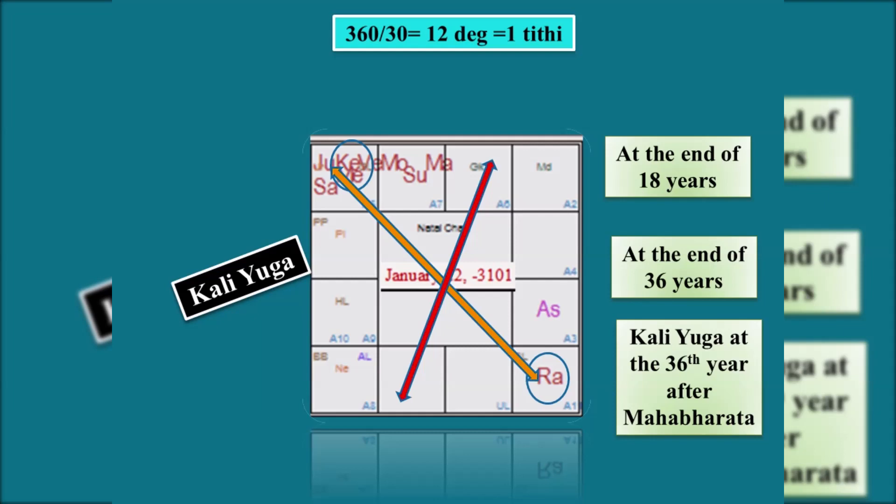In the text, Vyasa clearly says that he had seen Amavasya happening on Chaturadashi or Panchadashi and not on Triodashi. So he is referring to the tithi.